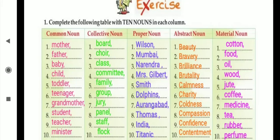First question: Complete the following table with ten nouns in each column. There are total five kinds: common noun, collective noun, proper noun, abstract noun, and material noun. For each we have to write ten examples.